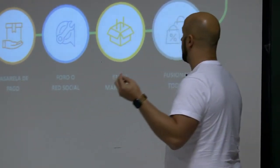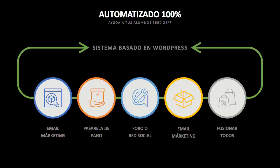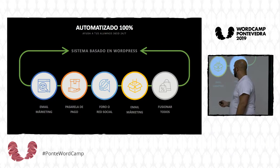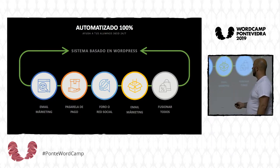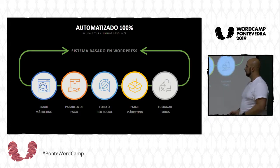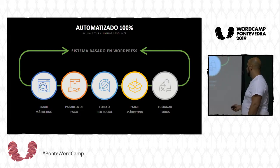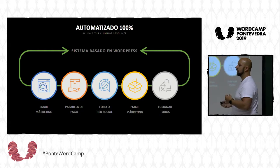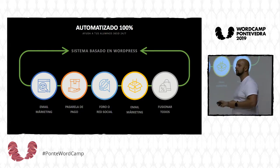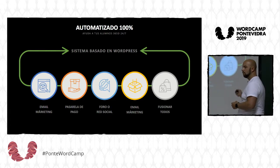Si lo pasamos basándolo en WordPress, la primera parte del embudo de ventas sería email marketing, tras tener una entrada de leads ya sea por SEO, SEM, un lead magnet o lo que sea. Una pasarela de pago para la compra y entrega del producto. Un foro o red social para hacer la parte de soporte. Email marketing de nuevo para la parte de fidelización. Y fusionar todos para la parte de venta complementaria, porque volvemos otra vez al inicio — volvemos otra vez a la rueda.